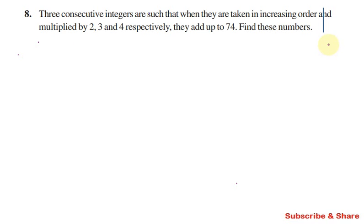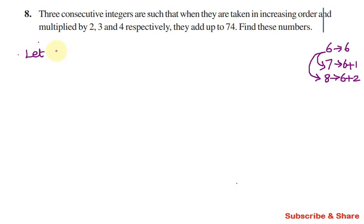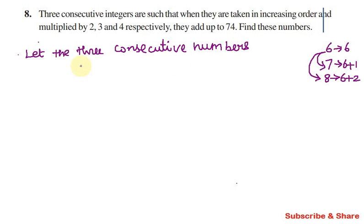Let's say there are 3 numbers: 6, 7, and 8. Here, 7 is 6 plus 1, and 8 is 6 plus 2. Since we don't know the actual numbers, let the three consecutive numbers be x, x plus 1, and x plus 2 — written in increasing order.